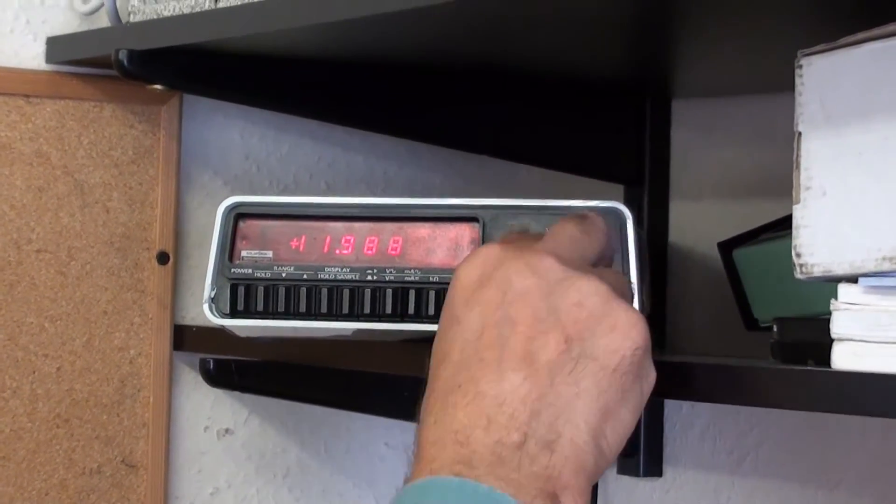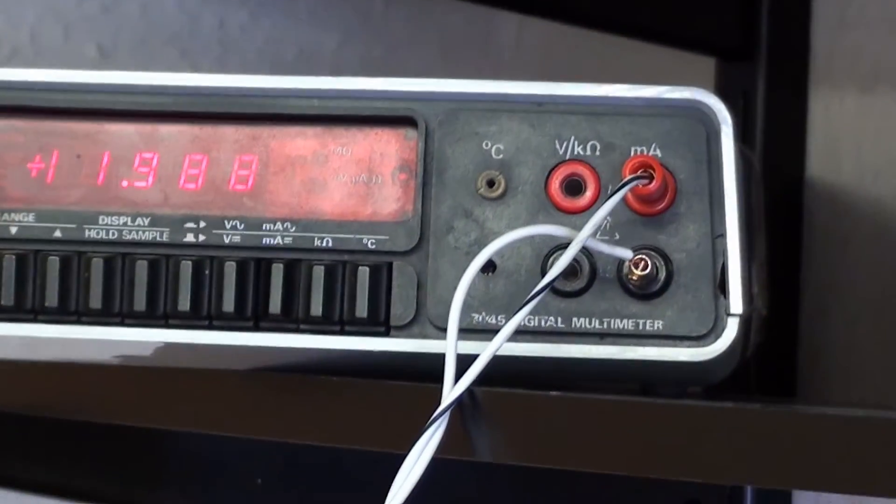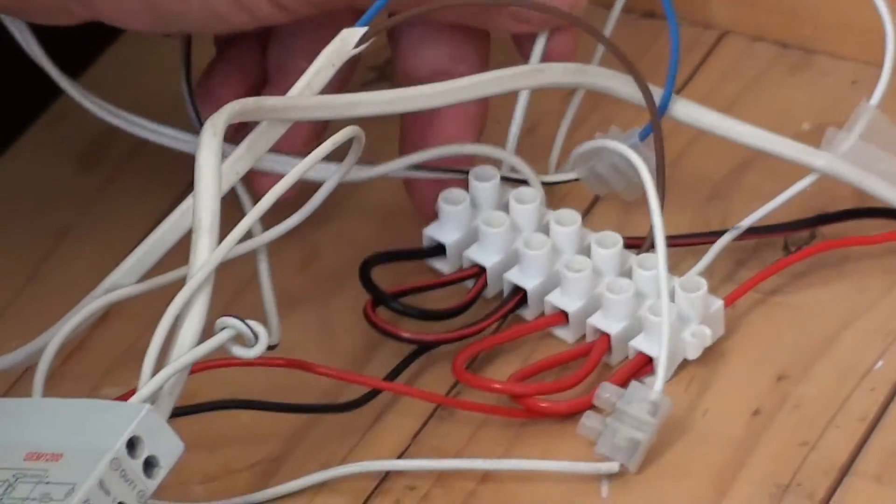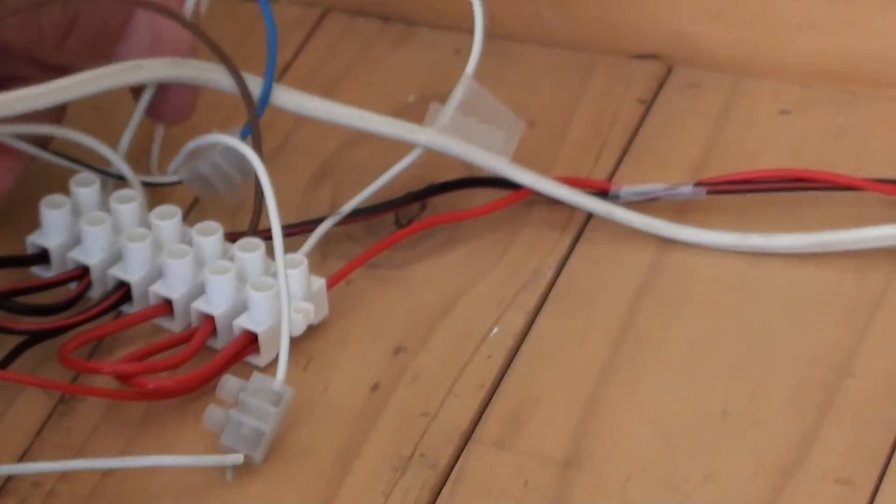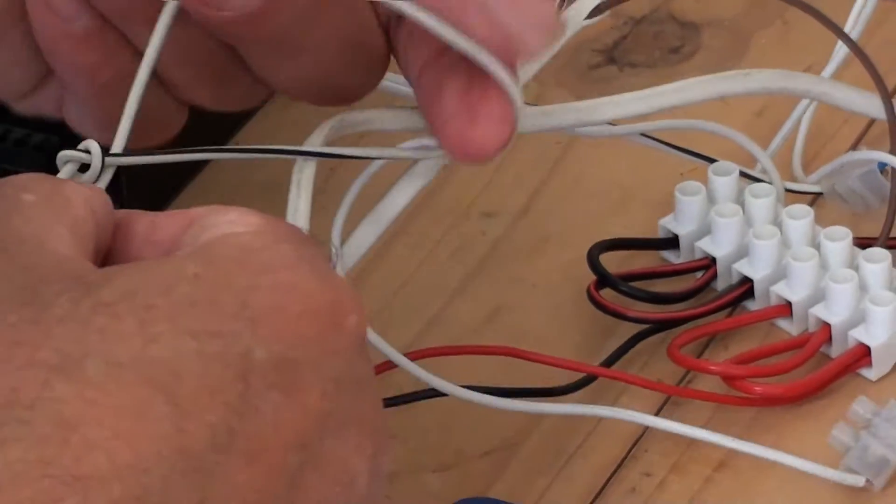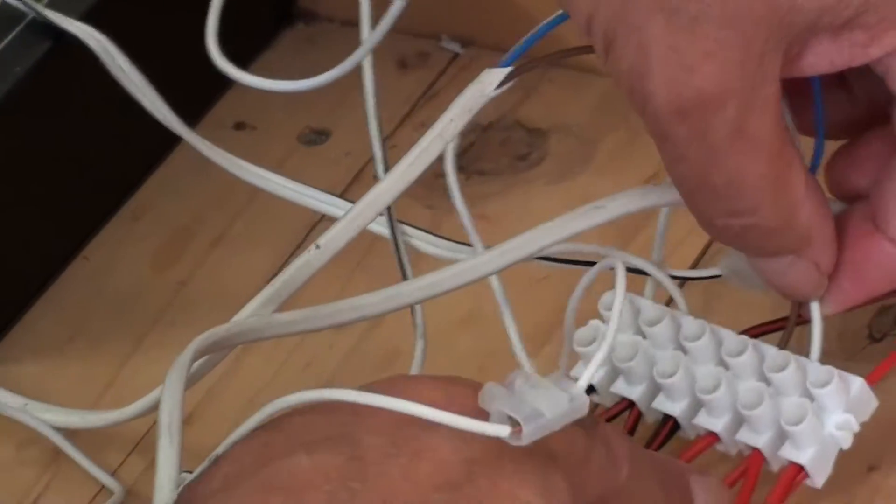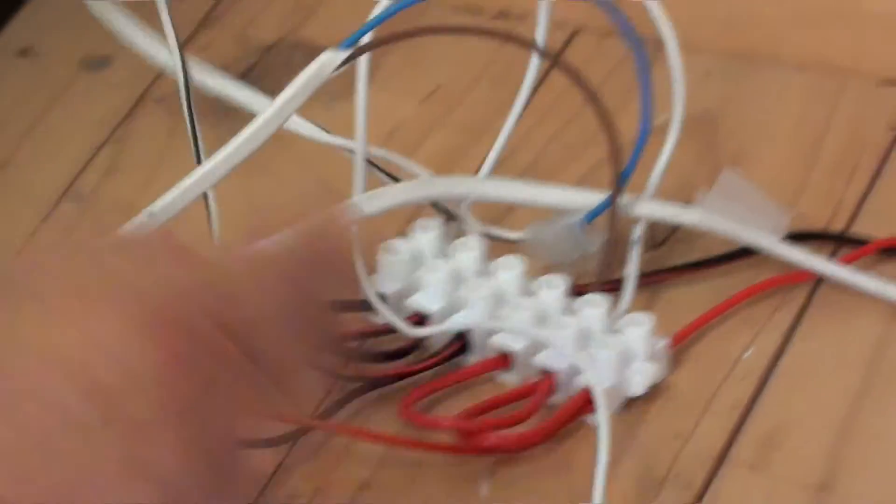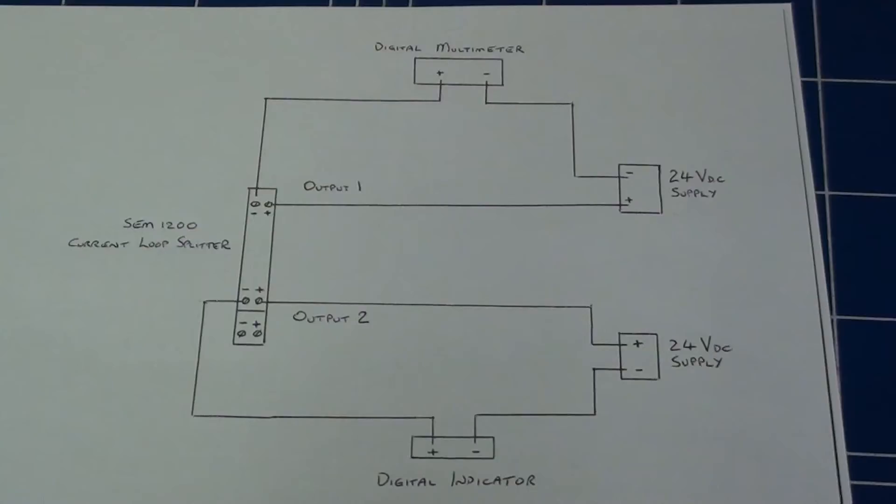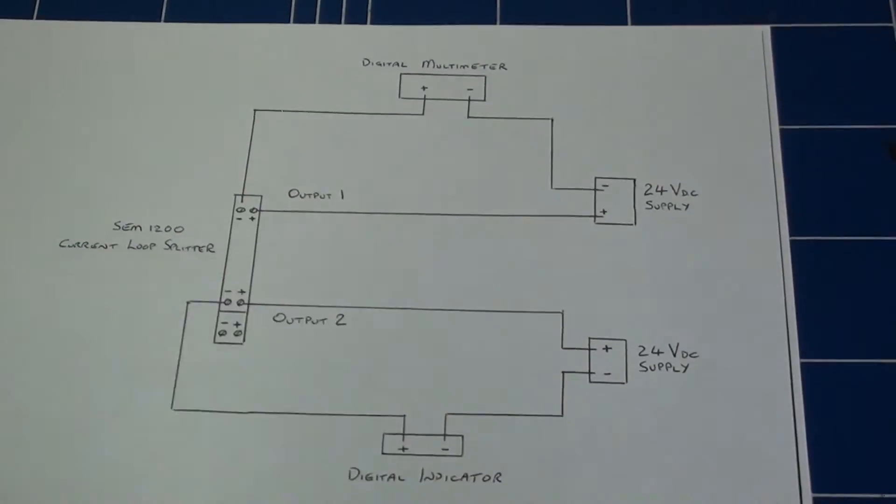The negative of the multimeter, the plain white wire comes back down here to the negative of the 24V DC supply, and the positive of the 24V DC supply goes to the positive on output 1. Positive to the plus of the 24V DC supply, here's my 24V DC supply.